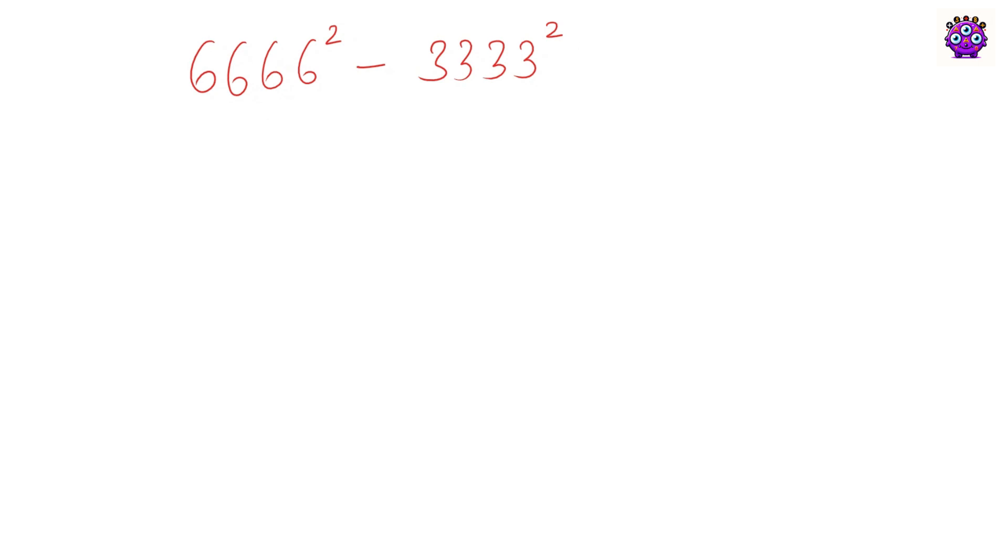Hi guys, how to solve this math olympiad algebra problem: 6666² - 3333². This is in the form a² - b², and we know that a² - b² equals (a + b) times (a - b).